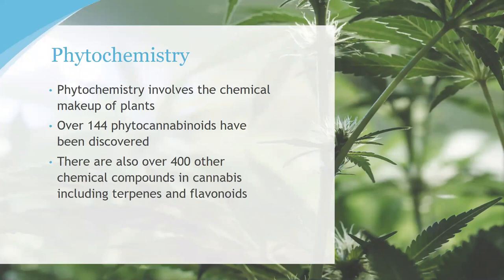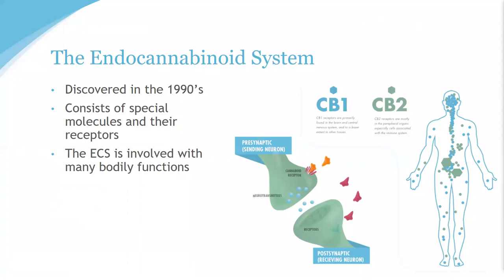Let's start with the endocannabinoid system — that means receptors and cannabinoids. Let's start by looking at our own amazing human body and explain why cannabis works as medicine. Incredibly, there are 11 major organ systems that hopefully work together to contribute to us being healthy and well. These include, among others, the circulatory, immune, muscular, nervous, and skeletal systems. Science has known about these for quite some time, and there are volumes of independent knowledge in medical literature denoting our understanding of them.